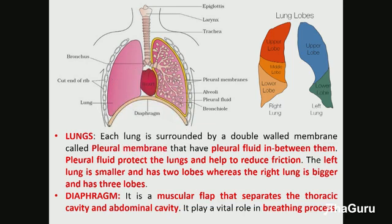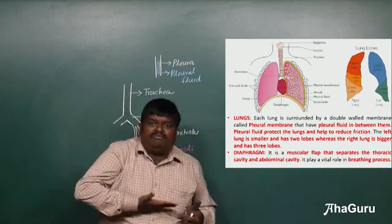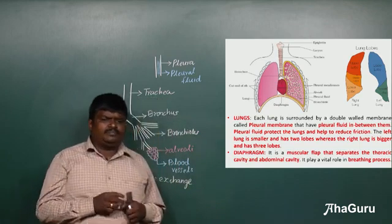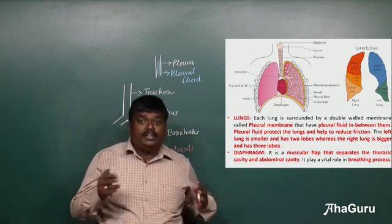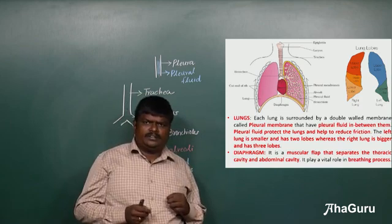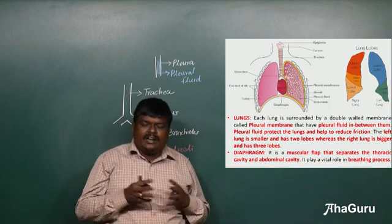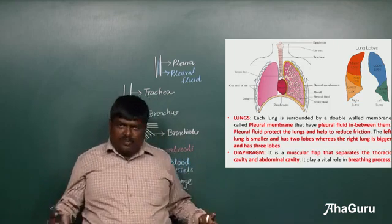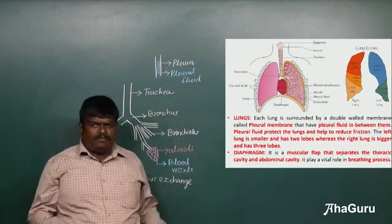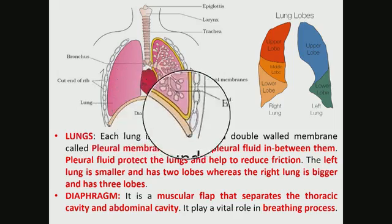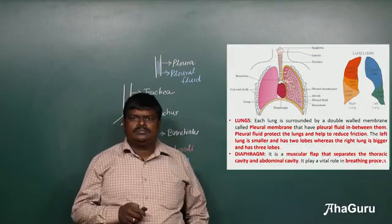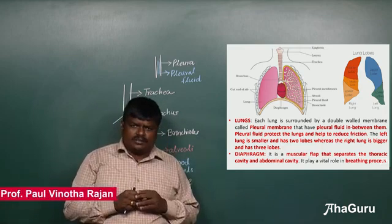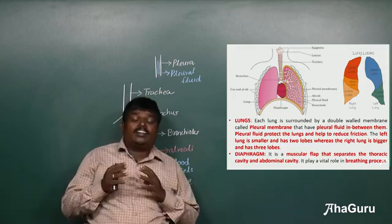The diaphragm separates the chest cavity from the abdominal cavity. It is very important for breathing, as it plays a key role in the expansion and contraction of the lungs. This completes the overview of the structure of the human respiratory system.